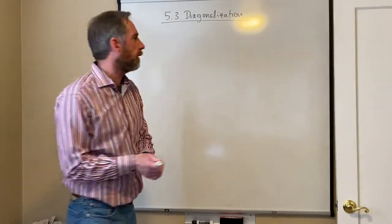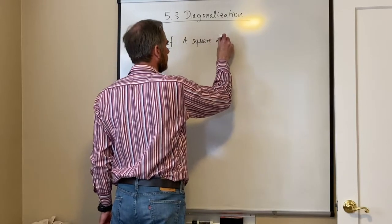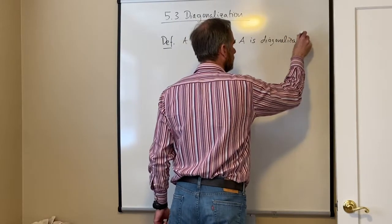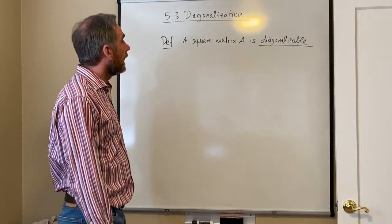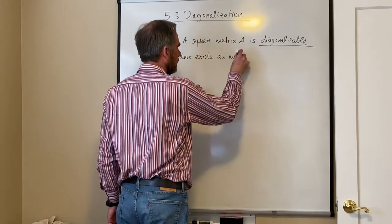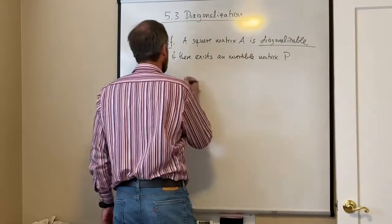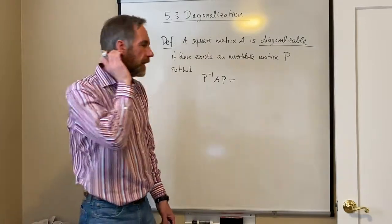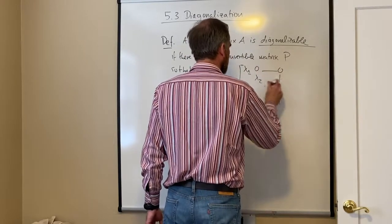The first thing I want to start with is a definition. If I have a square matrix A, it is diagonalizable if there exists an invertible matrix P of the same dimension such that if I use P as a change of basis, then P inverse A P is a diagonal matrix.